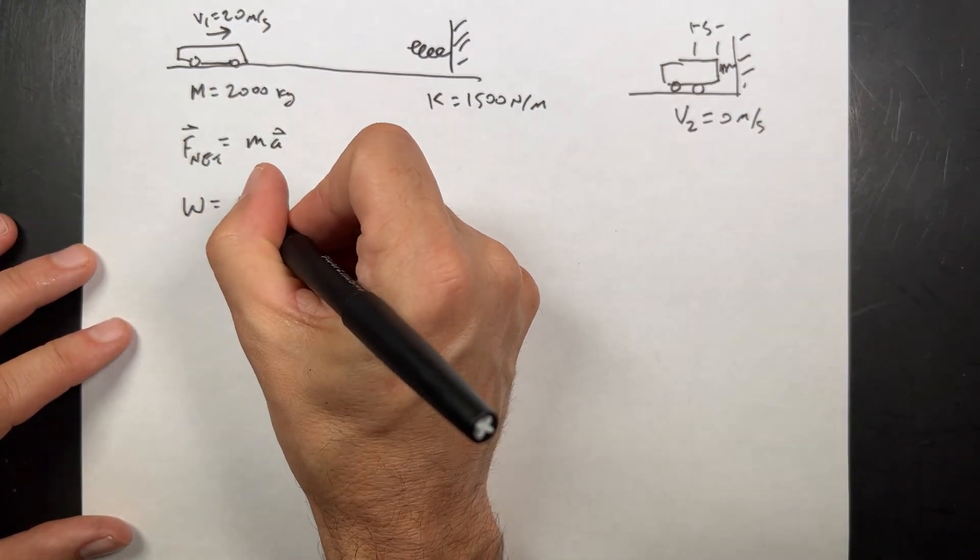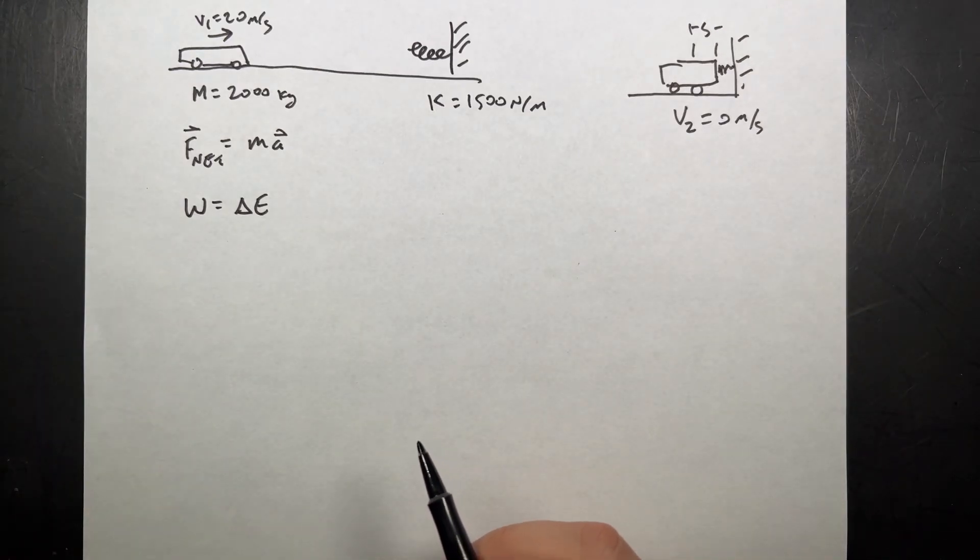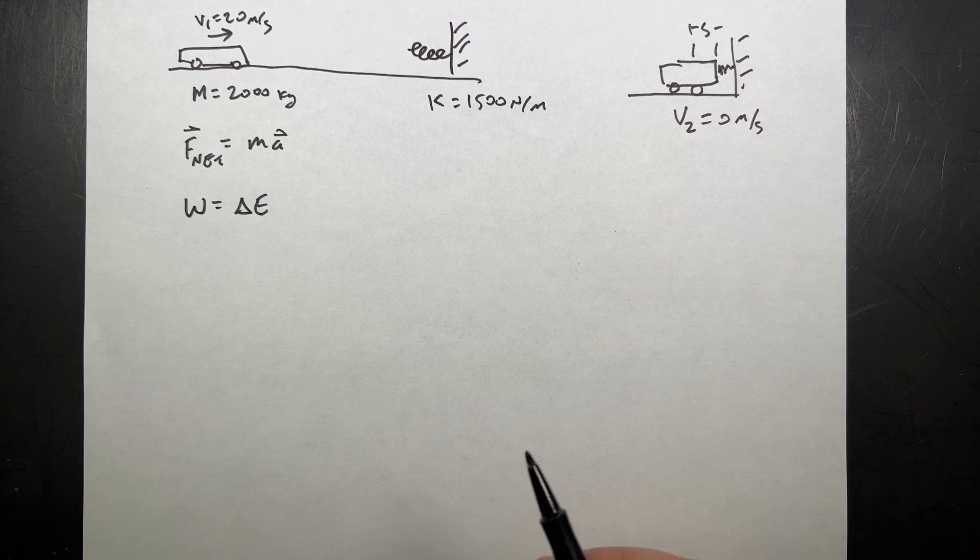we can use work as the change in energy. The work energy principle doesn't care about the force. It cares about the change in position and the work. So in order to calculate the work and the change in energy, we need to declare our system.